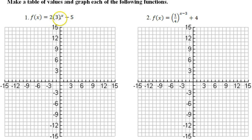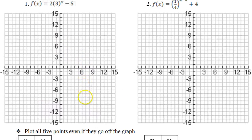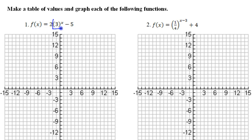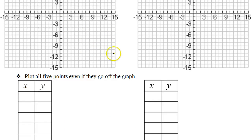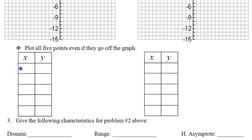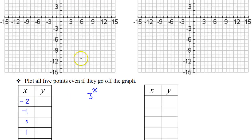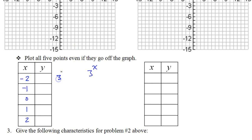Problem number one. I see that this is going to be shifted down 5 and have a vertical stretch by a factor of 2. However, we will start by just graphing the parent function, which is just 3 to the x power. Since we're just doing the parent function, we can use the following x values: negative 2, negative 1, 0, 1, and 2. So we are graphing 3 to the x power, meaning 3 to the negative 2, negative 1, 0, 1, and 2 powers.